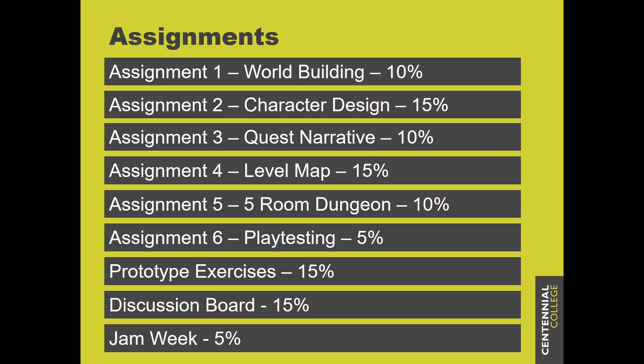Assignment four is your level map, worth 15%. What I'm looking for in that particular assignment is for you to finish the actual map — a proper map of your level. I'm not looking for all the descriptions of each and every room; I'm looking for a properly designed map that takes into account metrics, gameplay, and everything else — but it is only the map. Assignment five is the five-room dungeon, worth 10%. You're going to take that map, that world you've built, the characters involved, and the quest and narrative you've created, and you're now going to fill out the full adventure.